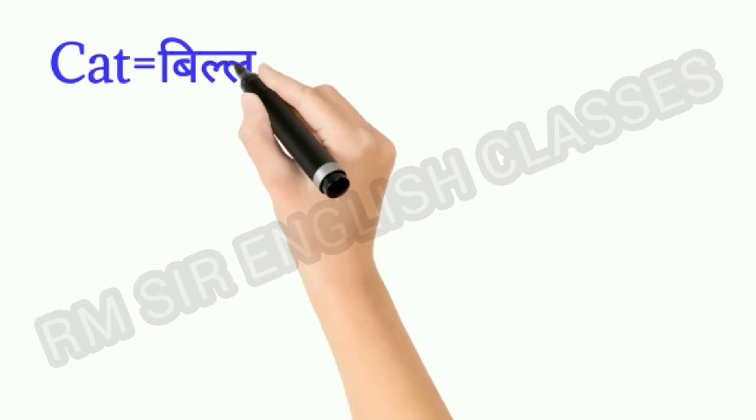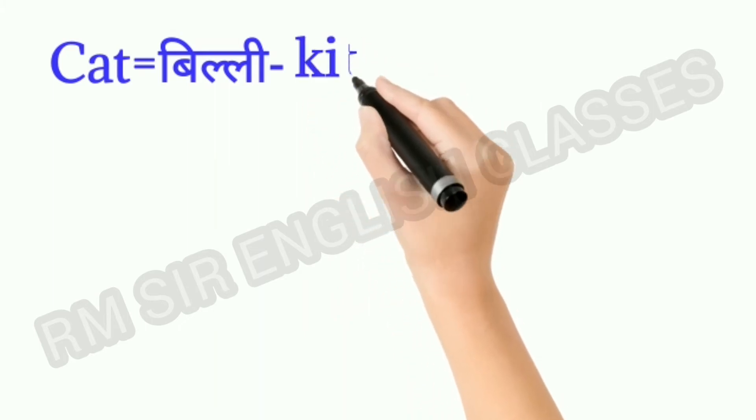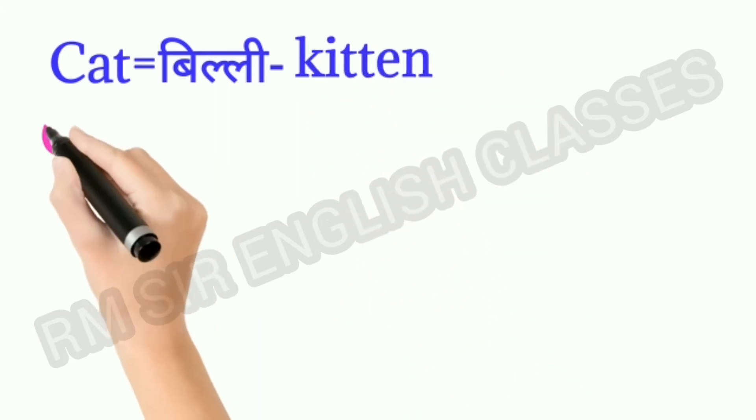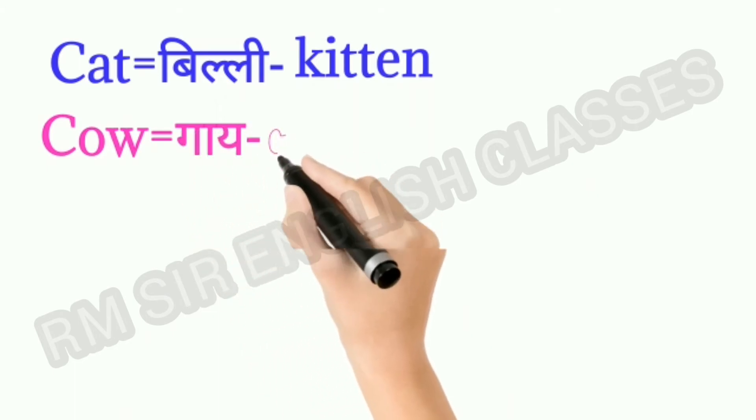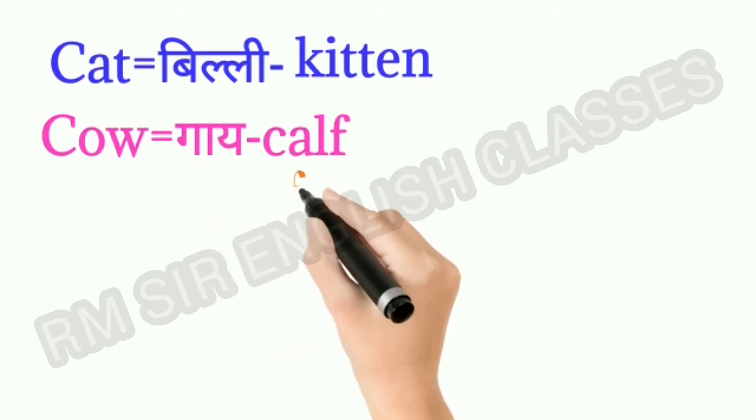Cat means billi. The baby cat is called kitten. Cow means gai. The baby cow is called calf.